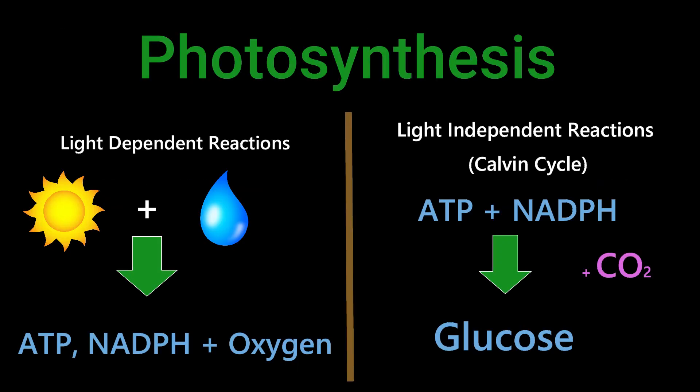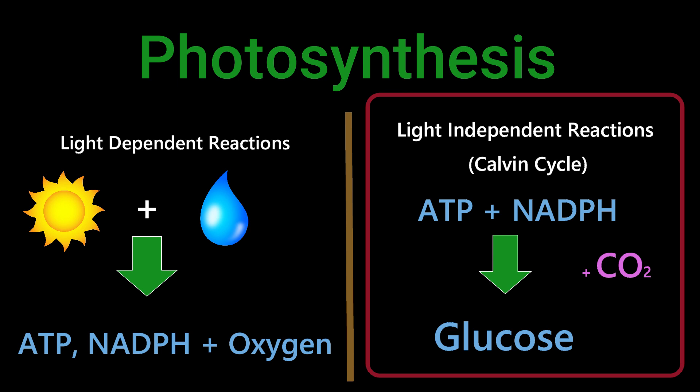So like I said, we have the light-independent reactions as the second part of photosynthesis. This stage is also called the Calvin cycle because a process called the Calvin cycle happens during this stage. When we're starting off into this stage, we already have the two products produced from the light-dependent reactions: ATP and NADPH.